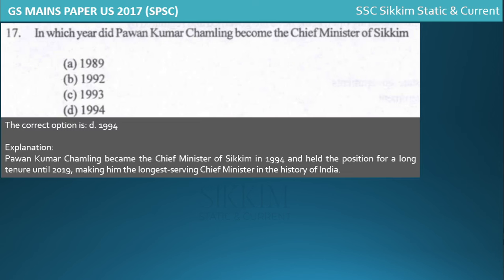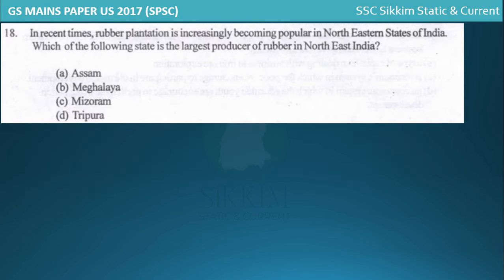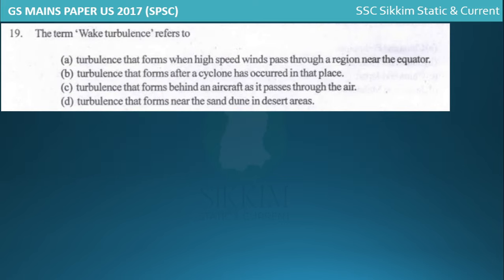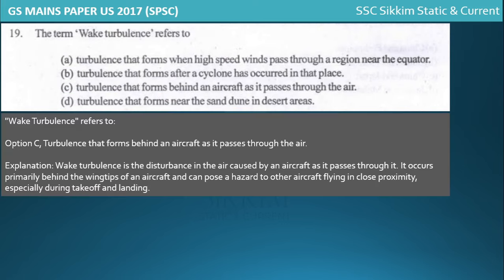Regarding rubber cultivation, a rubber plantation is increasingly becoming popular in northeast states of India. The largest producer of rubber in northeast India is Tripura. The next question defines water turbulence - it is the turbulence that comes behind an aircraft as it passes through the air - this is from the space and science section.